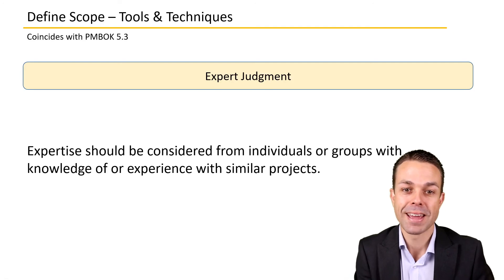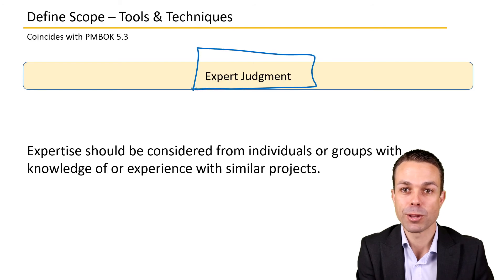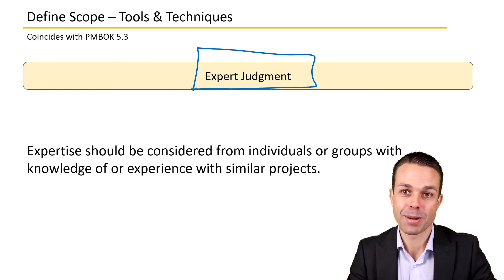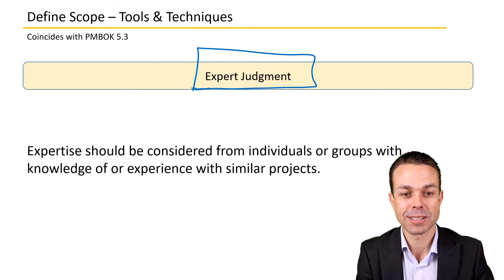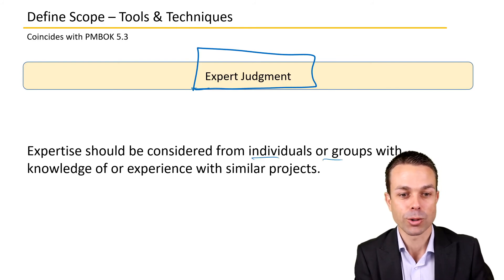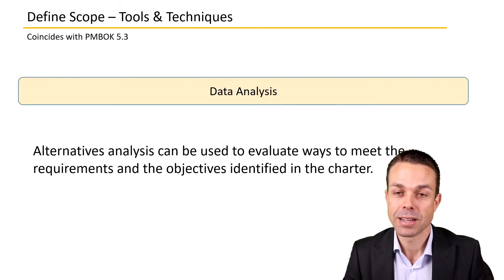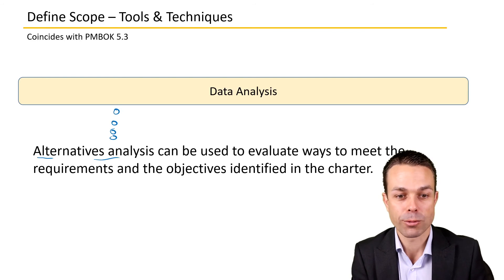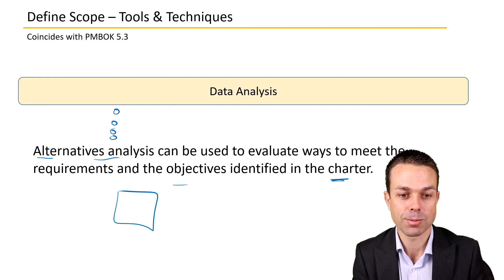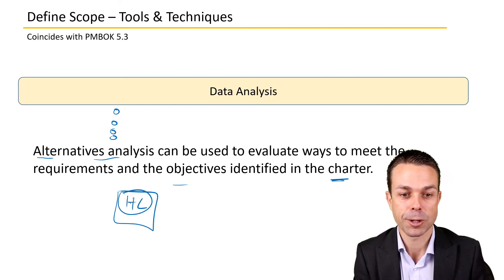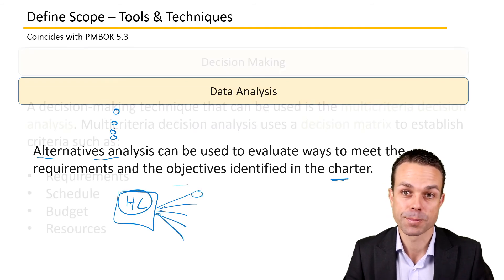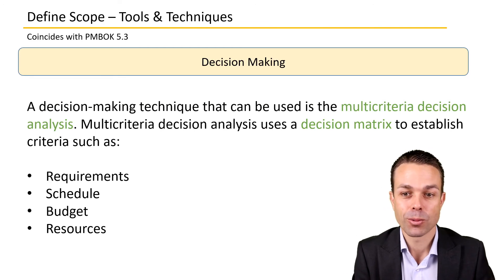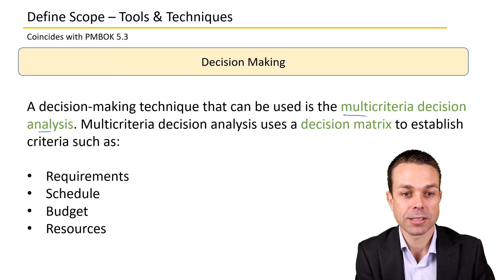For tools and techniques, we'll encounter expert judgment — a lot of people from whom we'll be gathering and eliciting information as part of defining scope. Expertise should be considered from individuals or groups with knowledge or experience of similar projects. Data analysis involves evaluating alternatives: we may have many different alternatives to analyze and evaluate in terms of ways to meet the requirements and objectives identified in the charter, and it's time to analyze those alternatives.